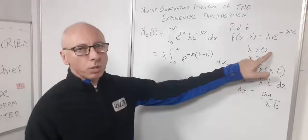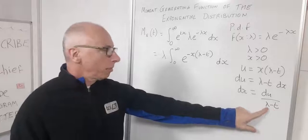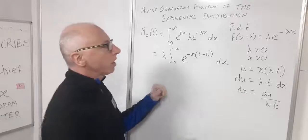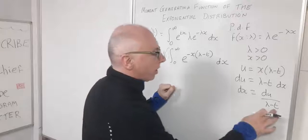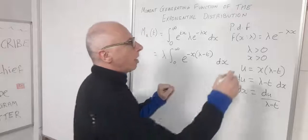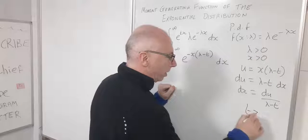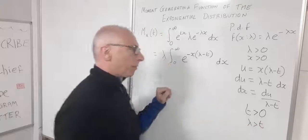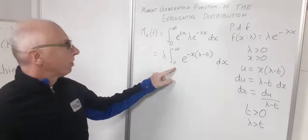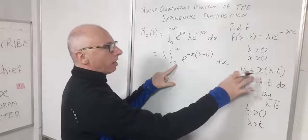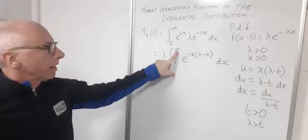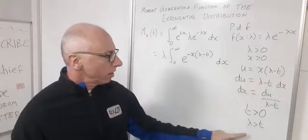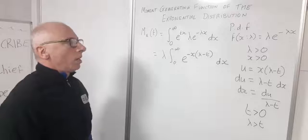Since λ is always greater than zero, we need the additional stipulation that λ > t, so we don't affect the sign of (λ − t). So t > 0 but t < λ. For the bounds: when x = 0, u = 0; when x → ∞, u → ∞, as long as λ > t.